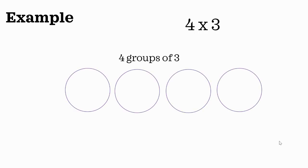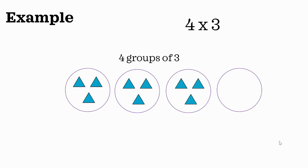Here these circles represent 4 groups and we're going to put 3 triangles in each group. So that's 3, 6, 9, 12. 4 groups of 3 equals 12, which means 4 times 3 equals 12.